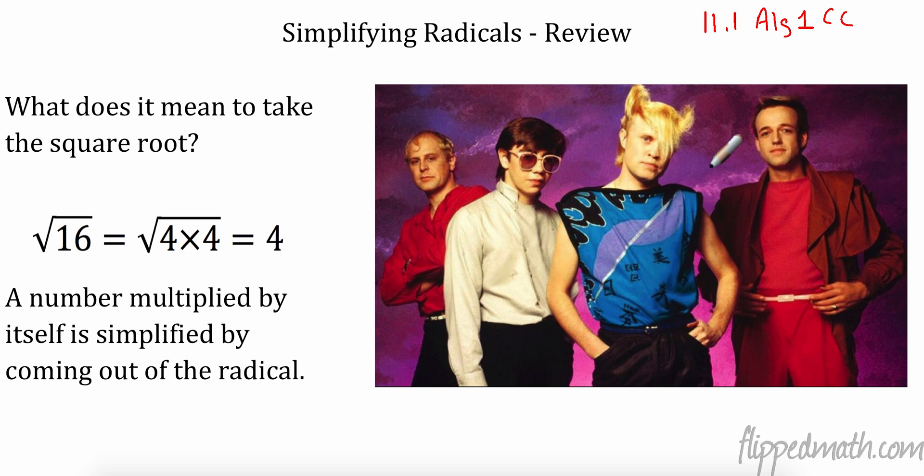This is an 80s band called Flock of Seagulls, and I mean, this may be one of the most iconic, stupidest haircuts I've ever seen. Anyway, what does it mean to actually take a square root? The square root of 16 is 4. Why? It's because it's a number that is multiplied by itself. It's simplified by coming out of the radical. So anytime we have a pair of numbers, that number is going to come out of the square root. So we're looking for these numbers that repeat. If I had a 3 and a 3 inside, I would take it out and it would be a 3 on the outside. That's the definition of what a square root is.